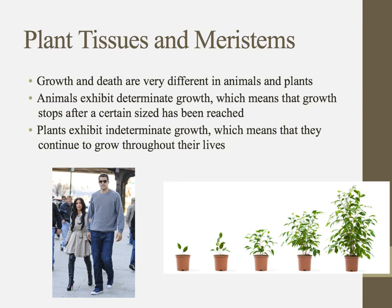Growth in plants is going to look a lot different than growth in animals. Humans are an example of an animal, and we have what's called determinate growth — that means growth is eventually going to stop after a certain size has been reached. Once you're done growing, you're done. You're eventually going to stop at the beginning of adulthood. This is determined by genetics, nutrition, environment, and so on, but our growth eventually reaches an end point.